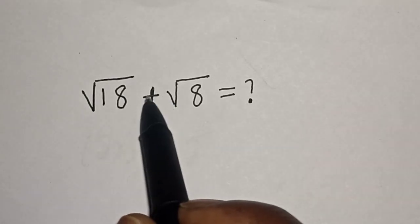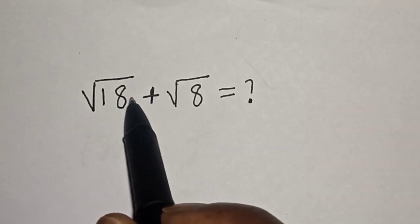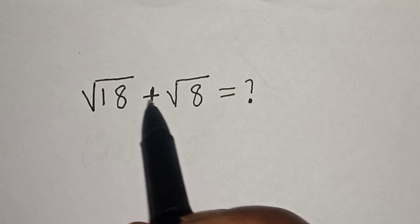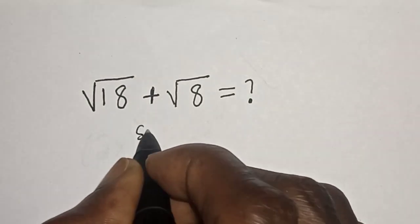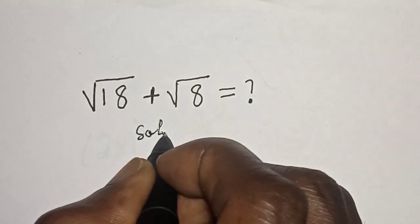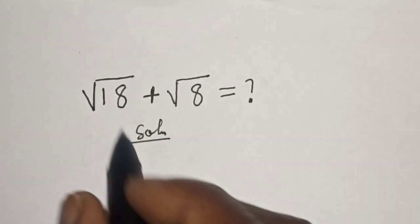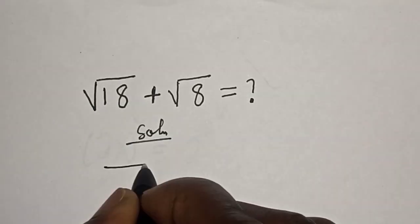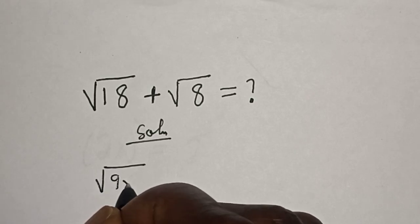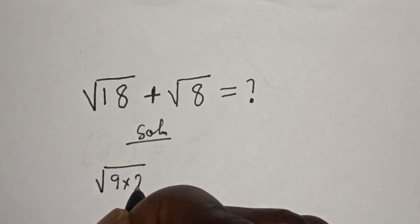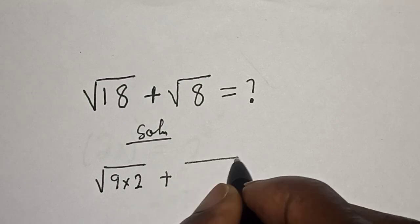Hello, welcome to Magis. In this class we want to simplify this square root problem. Solution: square root of 18 can be written as square root of 9 times 2, plus square root of 8.